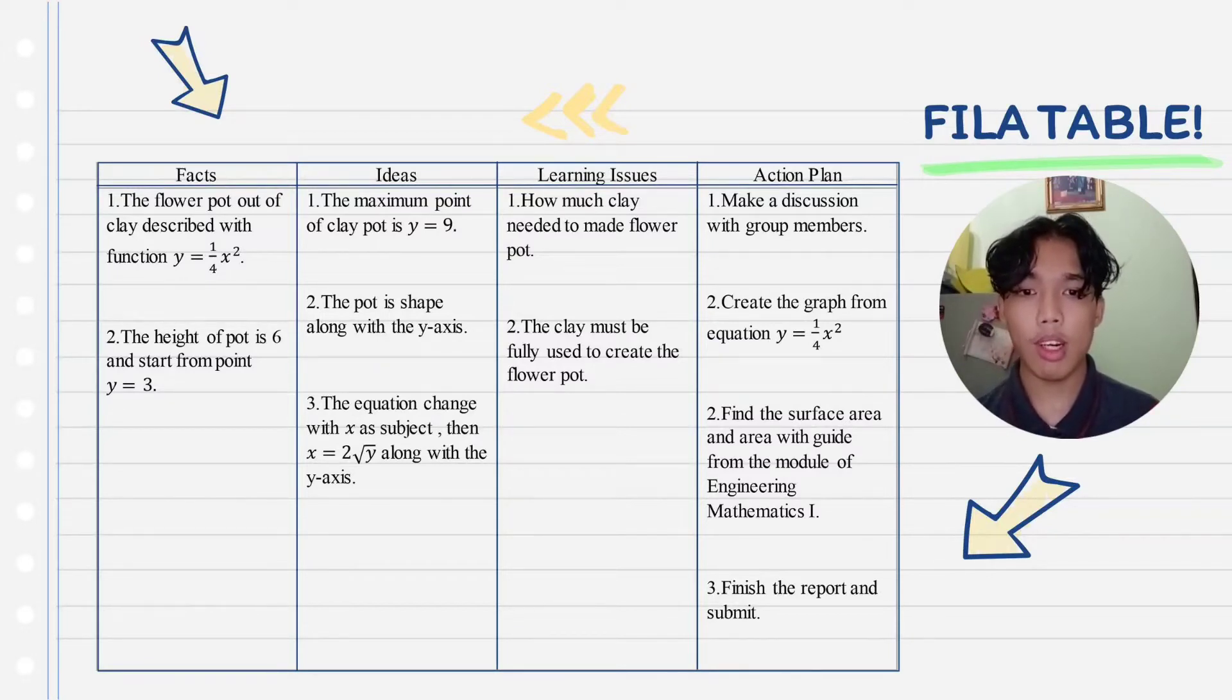The action that we took is to make a decision with the group members and create a graph from the equation y equals to 1/4 x power of 2. Next, we will find the surface area and area with guide from the module of Engineering Mathematics 1. After we got everything and calculated the calculations right, we will finish the report and submit it to the lecturer for further examination. Thank you.